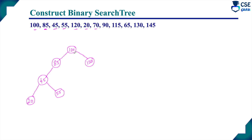Next element is 70. Compare with root 100 — lesser; go left. Compare with 85 — lesser; go left. Compare with 45 — greater; go right. Compare with 55 — 70 is greater than 55, so attach 70 as the right sub-tree element of 55. Next element is 90. Compare with root 100 — lesser; go left. Compare with 85 — 90 is greater than 85, so attach 90 as the right sub-tree element of 85. Next element is 115. Compare with root 100 — greater; go right. Compare with 120 — 115 is lesser than 120, so attach 115 as the left sub-tree element of 120.